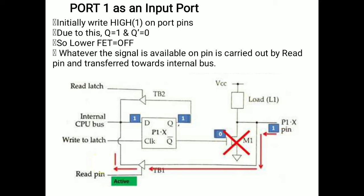Since current always flows through the low resistance path, whatever signal is available at the port pin will move towards the read buffer and through the read buffer move towards the internal bus. After voltage dropout through the internal pull-up resistor, some voltage remains, but due to the internal pull-up resistor, it will never go in an upward direction.